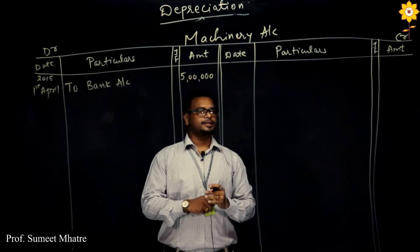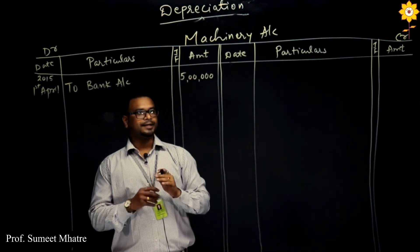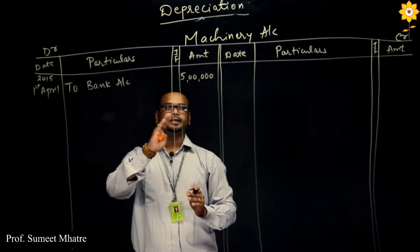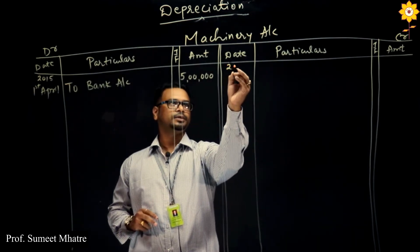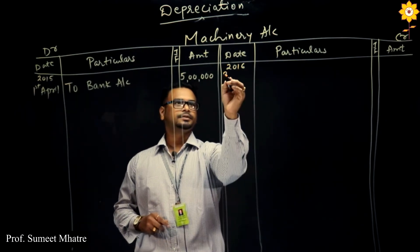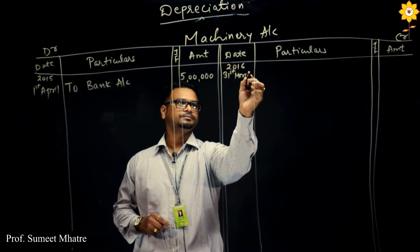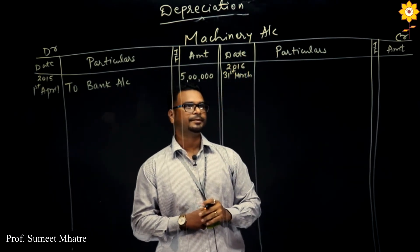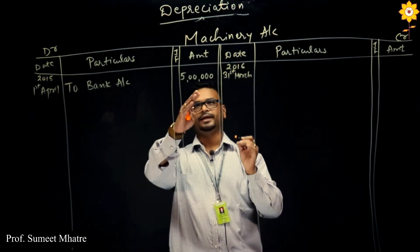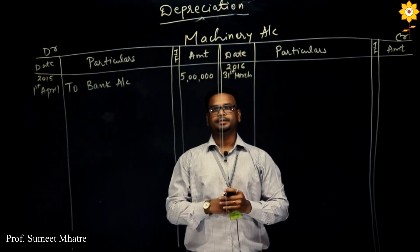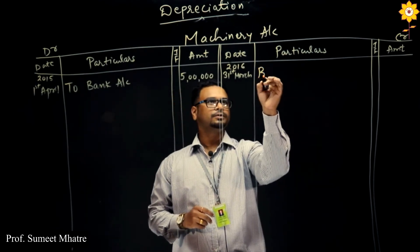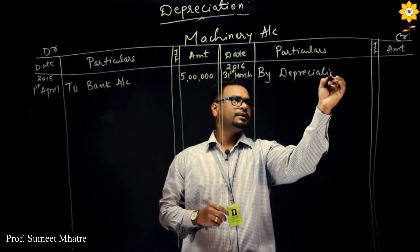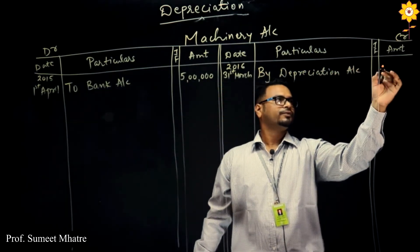As we are following Straight Line Method, it's a simple problem — no other purchase or sale is there. So we will directly go to the depreciation at the end of the year, that is 31st March 2016. The percentage given in the question is 10%, and 5 lakhs is the amount, so 10% of 5 lakhs is 50,000. So we write 'By Depreciation Account — 50,000'.